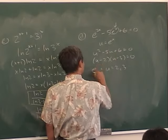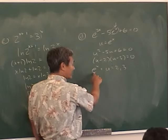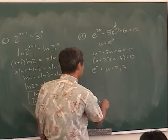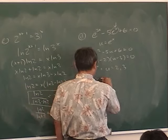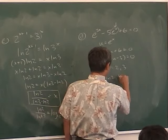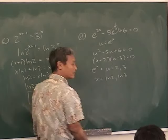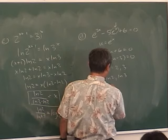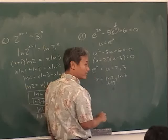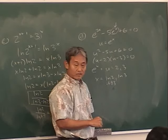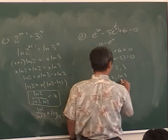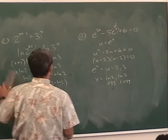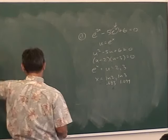So U equals 2 or 3. But remember, your substitution was E to the X. So how do you solve for X? How do I get rid of the E? LN both sides. So natural log of E to the X is X. And then natural log 2, you can't do anything with. And natural log 3, you can't do anything with. Those are your two answers. Anyway, it's useful to know. Natural log 2 is approximately 0.693, right? For those of you in chemistry, or took it last year, we used that for half-lives and things. And natural log 3 is about 1.099, approximately.